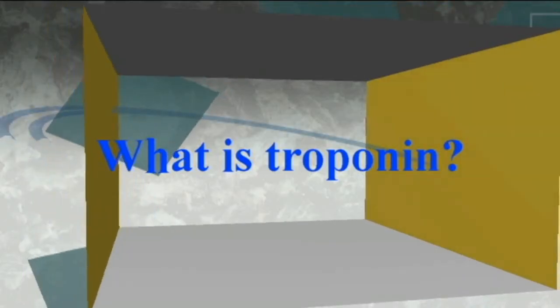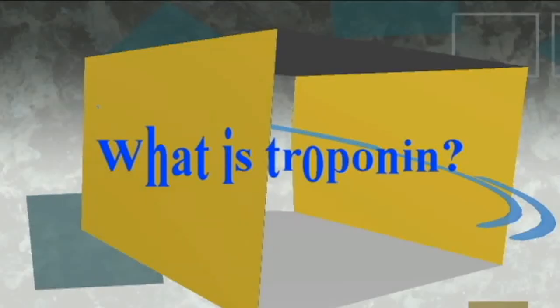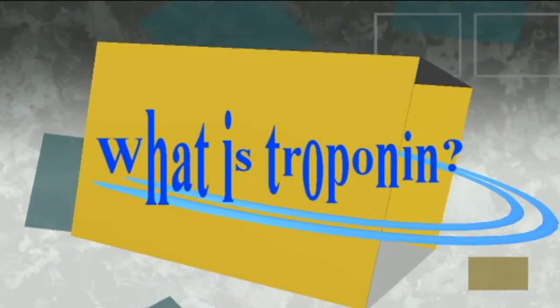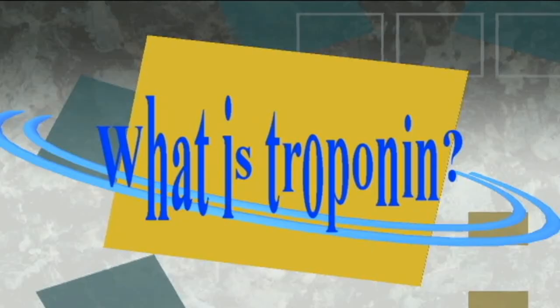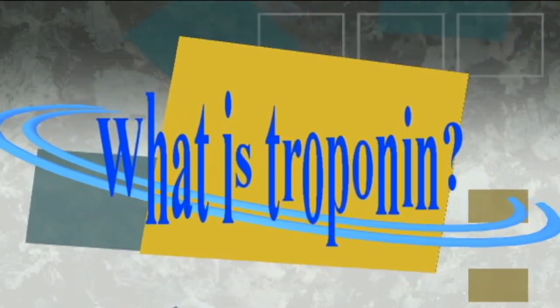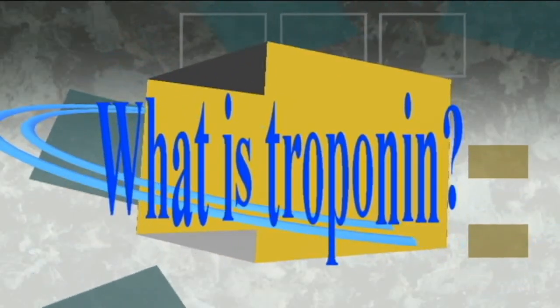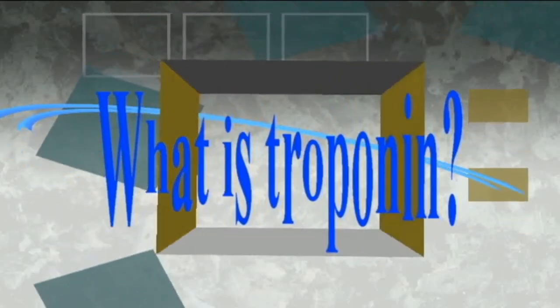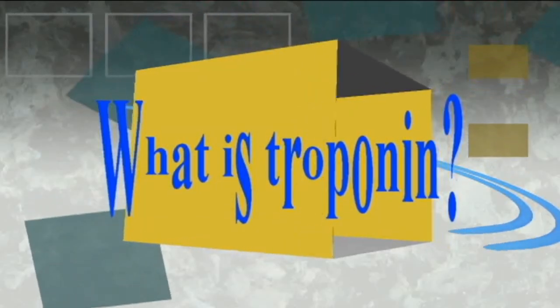What is troponin? Troponin refers to three different proteins. Troponin C binds calcium and transports troponin I so that muscles can contract. Troponin T binds troponin proteins to muscle fibers. The heart is essentially a muscle, and damage to the heart causes it to release troponin into the bloodstream.